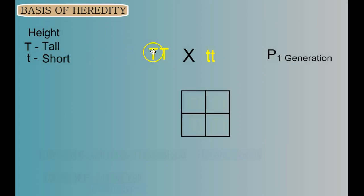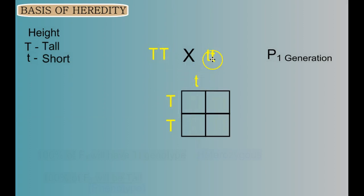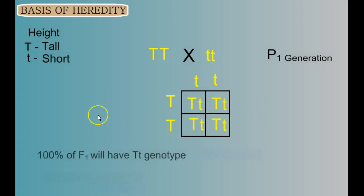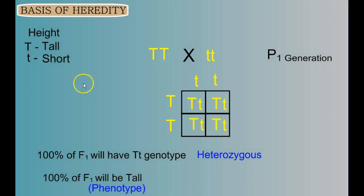Now we can show the cross in what we call a Punnett square. We take this parent's gametes and put them along one side, and the other parent's gametes along the other side, and then we see what happens when we combine them. We can see that all of the F1 generation — 100% — will have the Tt genotype. We describe this genotype as heterozygous.